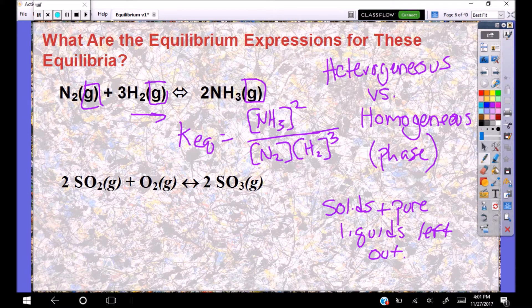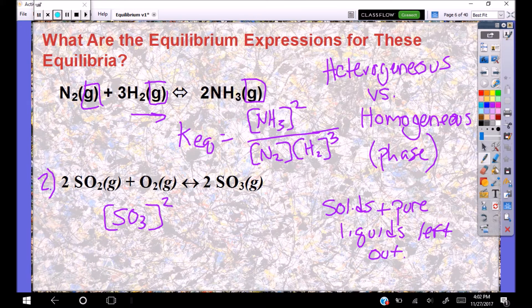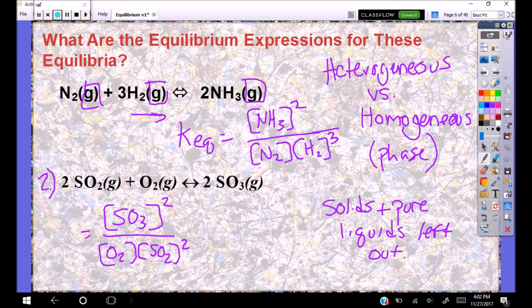So go ahead and identify the equilibrium expression for my second reaction here. Products over reactants. You should have said SO3 squared over the concentration of O2 times SO2 squared. And this is equal to KEQ. Pretty straightforward.